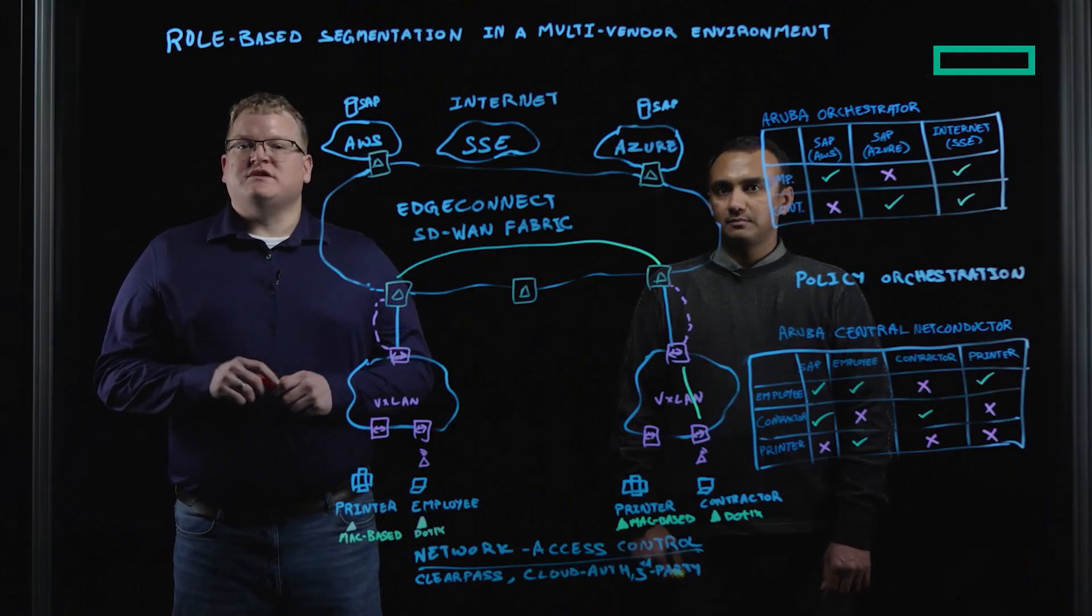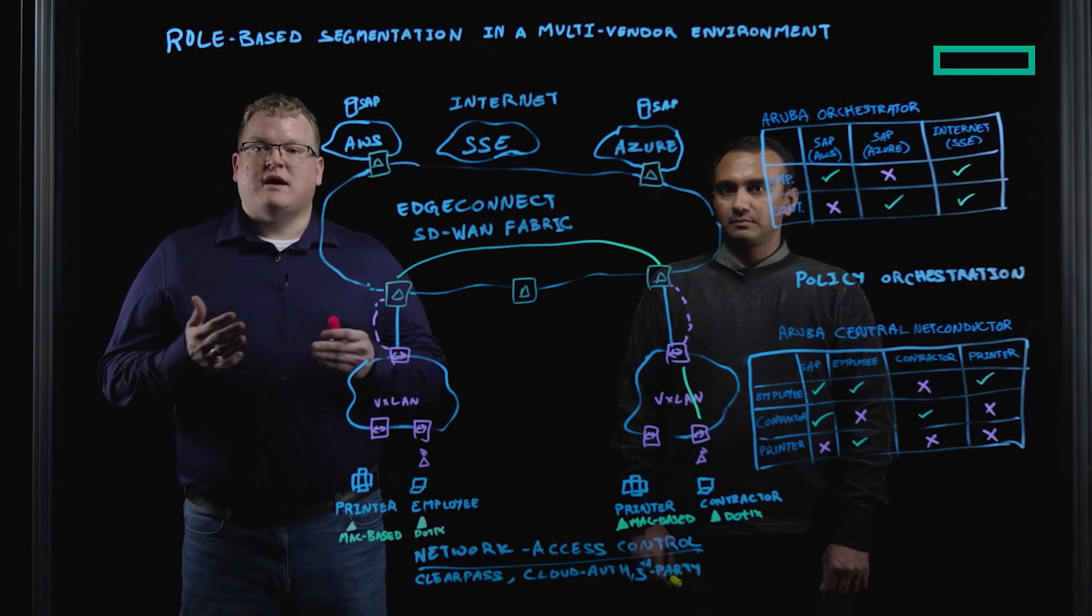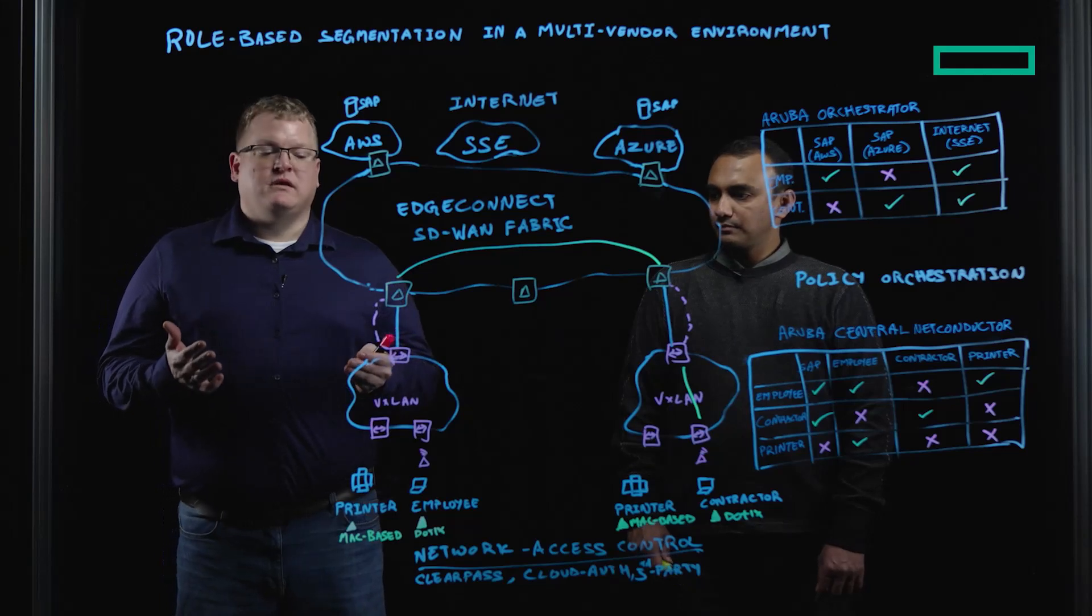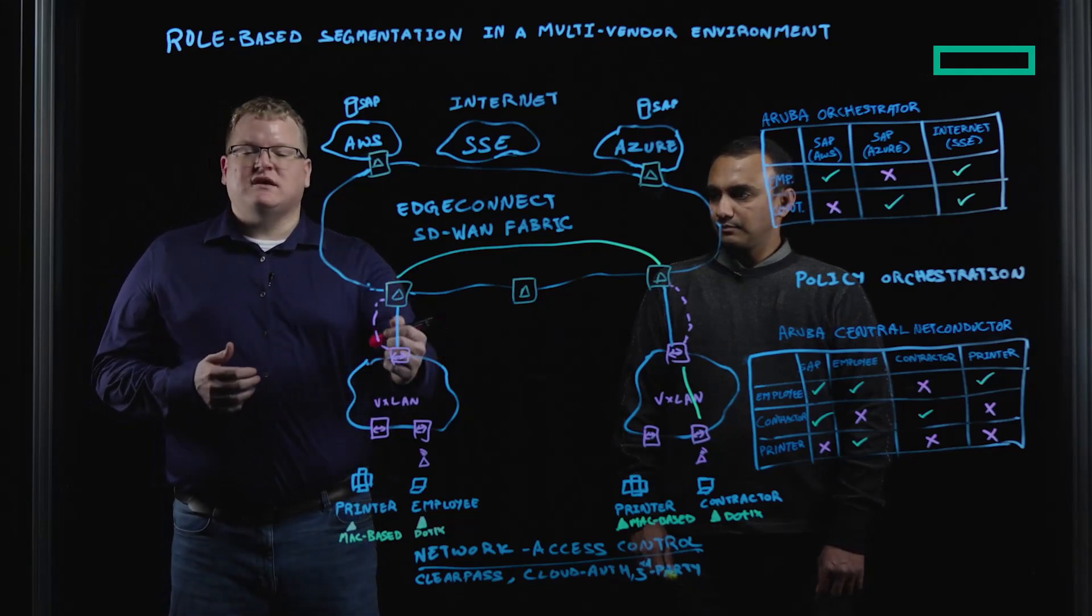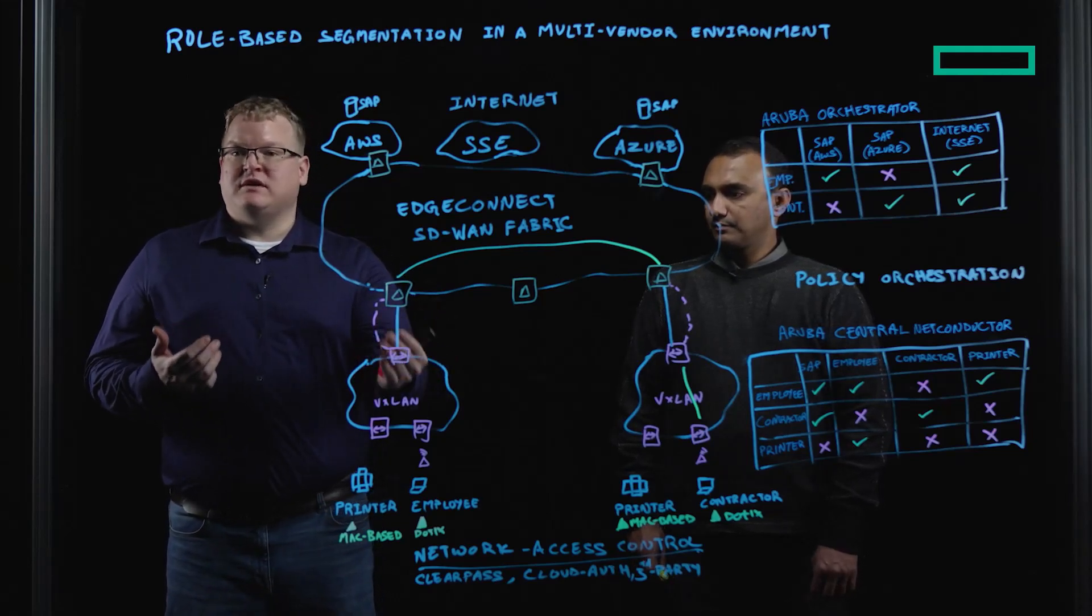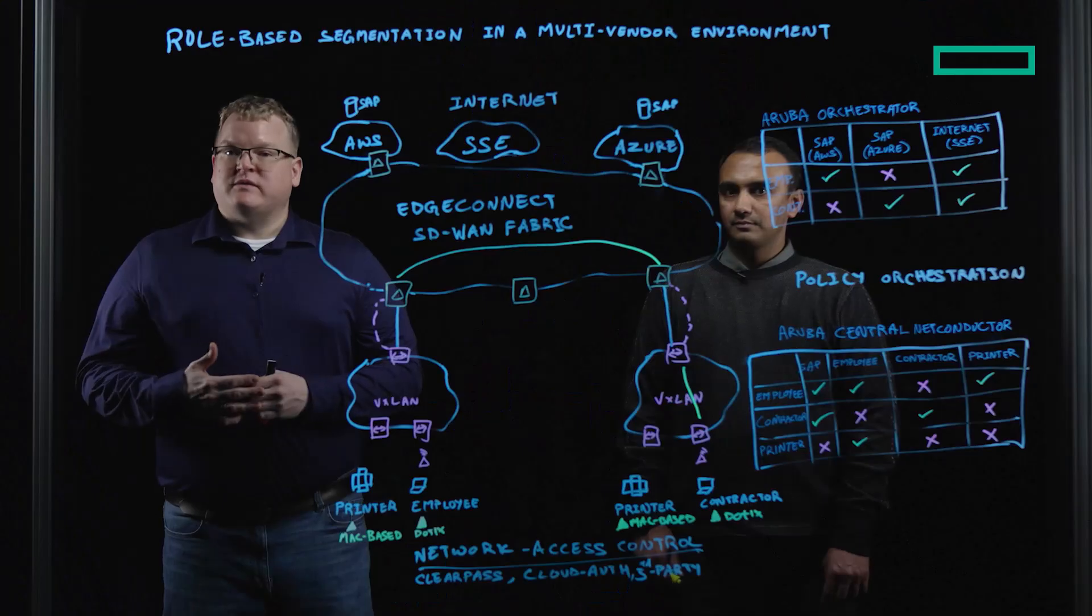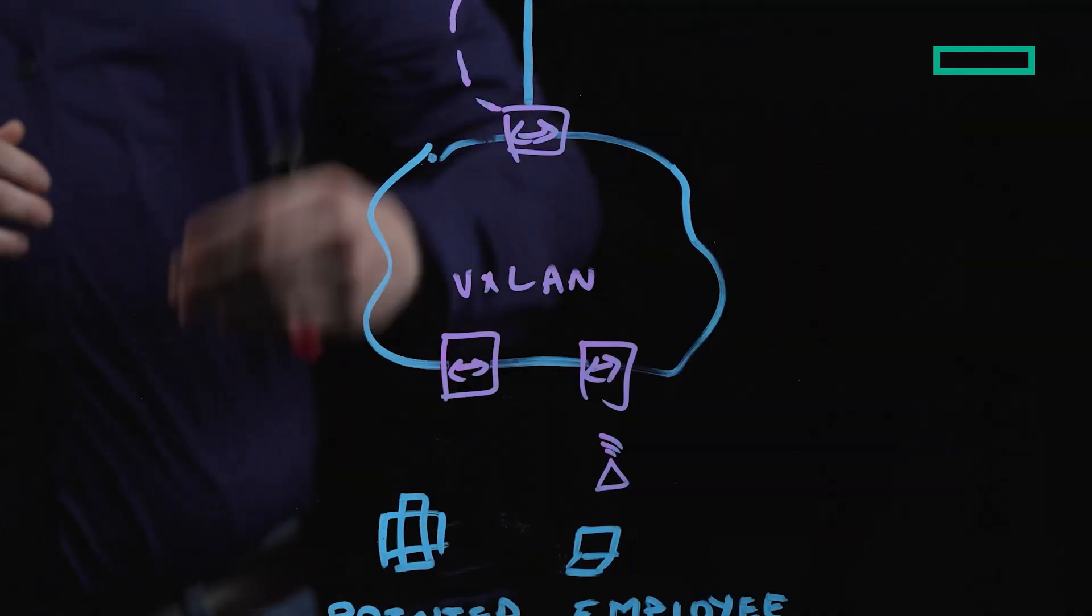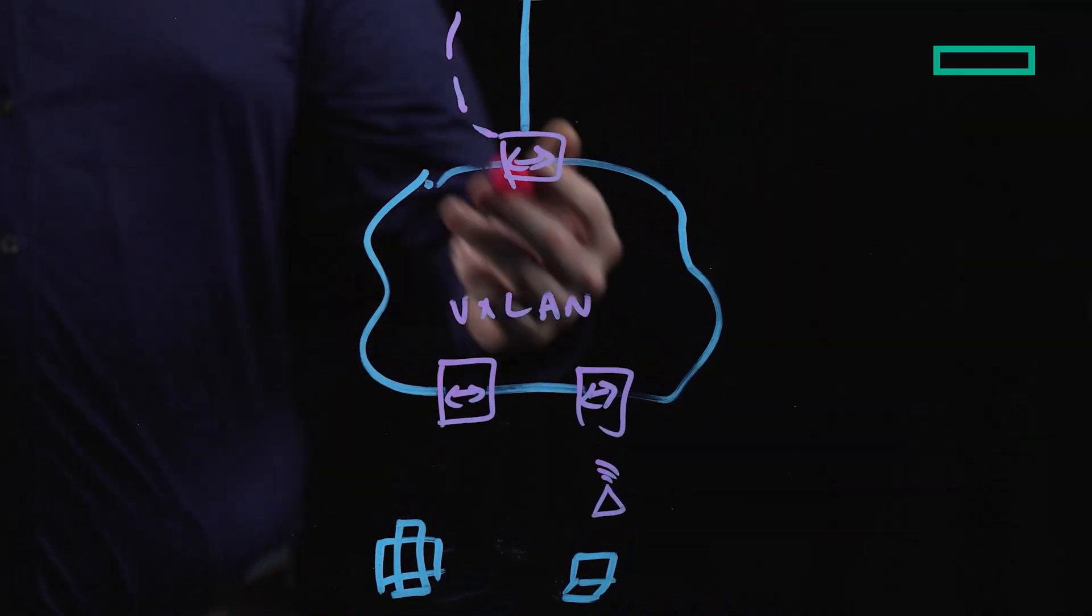In a multi-vendor scenario, either through an acquisition or perhaps a deliberate policy to implement multiple vendors SDN solutions, because the EdgeConnect interfaces with the LAN fabrics via that standards-based BGP EVPN VXLAN, EdgeConnect can carry that same role-to-role segmentation across the SD-WAN fabric, between LAN fabrics, even from third parties.